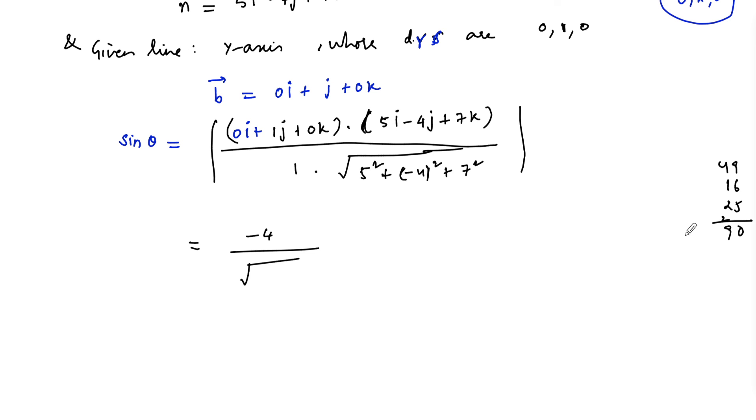Square root of 90 is 3 root 10, and the mod we can consider as 4 upon 3 root 10. Therefore, theta equals sine inverse of 4 by 3 root 10. It's the acute angle between the line and plane.